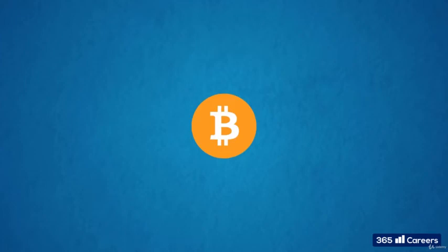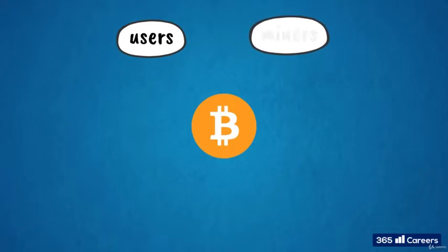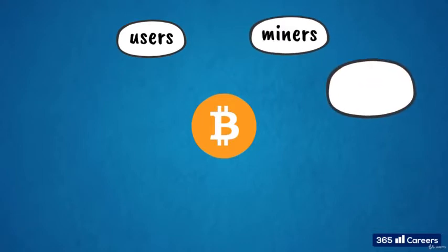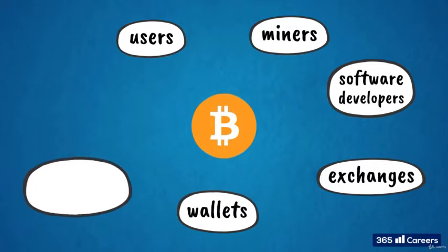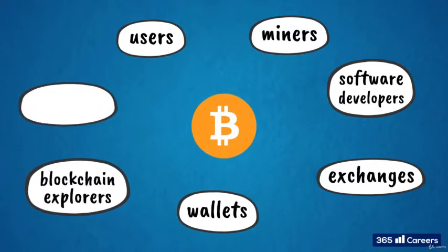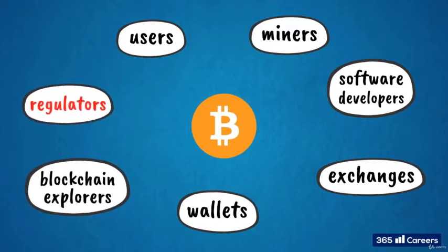As we all know by now, the Bitcoin ecosystem consists of users, miners, software developers, and applications like exchanges, wallets, and blockchain explorers. Other stakeholders are expected to get increasingly involved as well. Regulators and governments around the world are already paying close attention to the ecosystem.